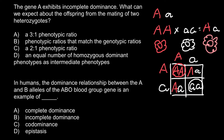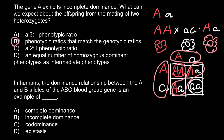The homozygous recessive genotype (aa) would produce white flowers, and the heterozygous genotype (Aa) would produce an intermediate color — pink — just like the parents. The homozygous dominant (AA) would produce red flowers. So as you see, the ratio would be 1 red to 2 pink to 1 white. The phenotypic ratios match the genotypic ratios, so the correct answer would be answer B.